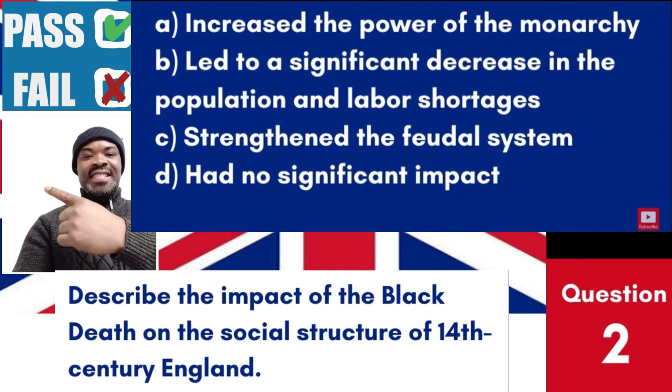Question 2: Describe the impact of the Black Death on the social structure of 14th century England. a. Increased the power of the monarchy. b. Led to a significant decrease in the population and labour shortages. c. Strengthened the feudal system. d. Had no significant impact. Answer: b. Led to a significant decrease in the population and labour shortages. The Black Death resulted in a drastic population decline, causing labour shortages and eventually leading to social and economic changes.